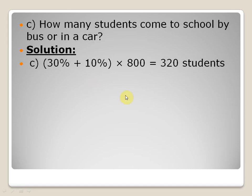Part c: How many students come to school by bus or in a car? Total students by bus is 30% and total students by car is 10%, so total percentage is 40%. 40% of 800 is simply 8 times 40, which is 320 students coming to school by bus or car.